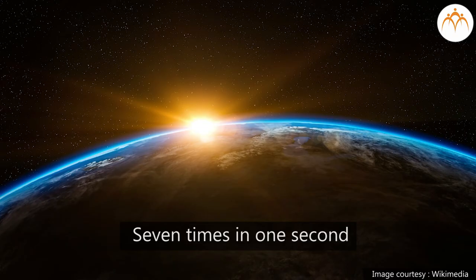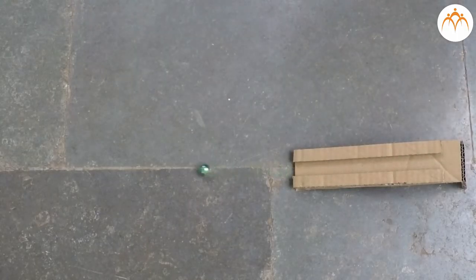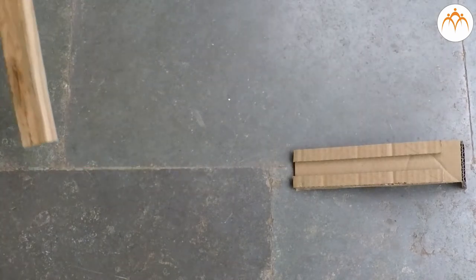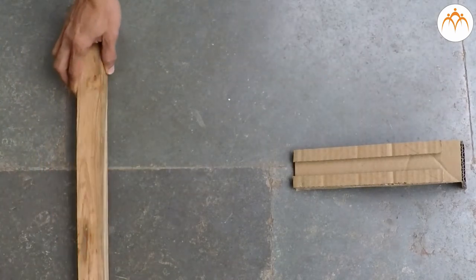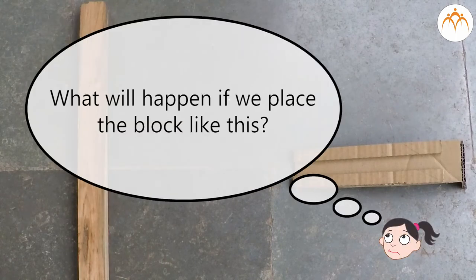If this marble is released from a slope it moves forward in a straight line, but if a wooden block is placed in the path it bounces back. What will happen if we place the block like this?